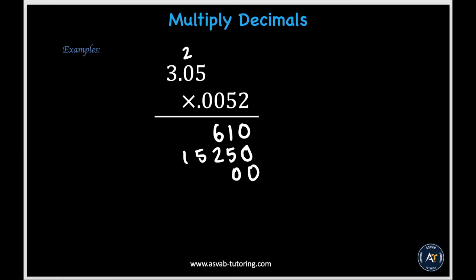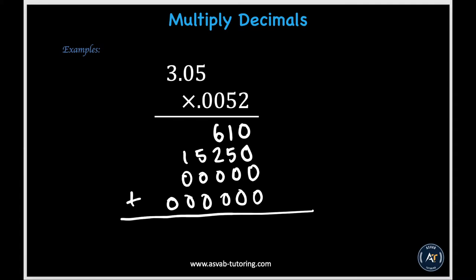Moving on to the hundredths place, which has a 0 — so all products are 0: 0 times 5 is 0, 0 times 0 is 0, and 0 times 3 is 0. Similarly, the tenths place also has a 0, giving all zeros again. Now that we're done multiplying, we add the rows just like in normal whole number multiplication. In the first column we have all zeros, so we put down 0. Then 1 plus 5 gives 6. Then 6 plus 2 gives 8. Then we have 5, then 1, then 0.